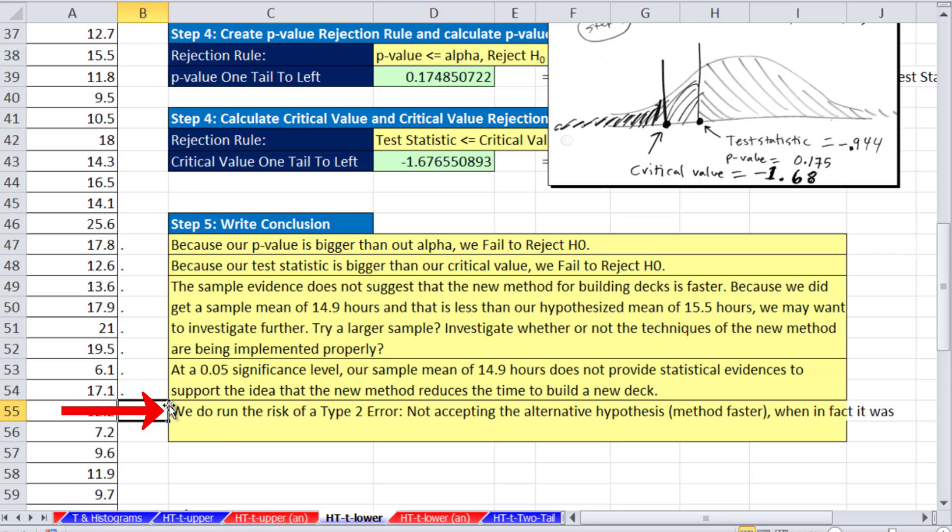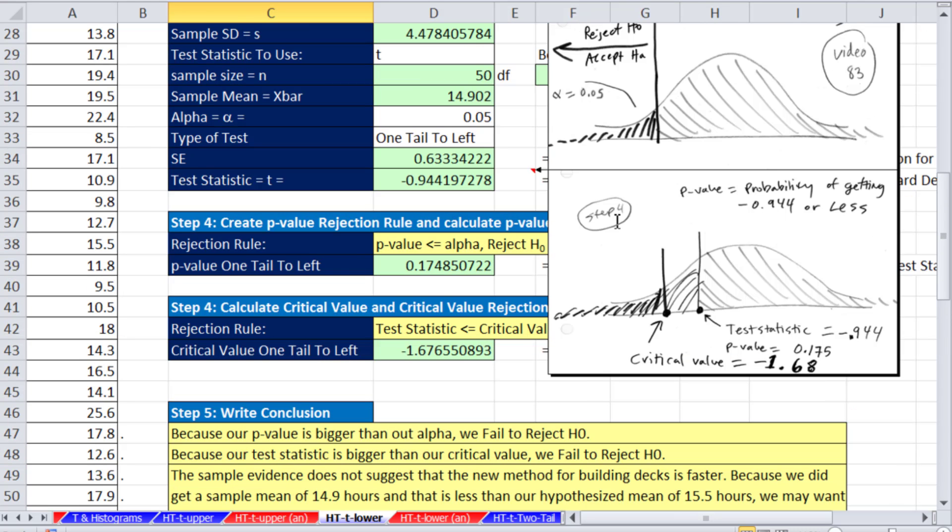Now we do run the risk here. This is a type 2 error of not accepting the alternative hypothesis, meaning the method is faster when in fact it is or was. That's our second example of t. This is a t-test on the lower.